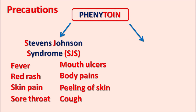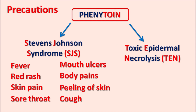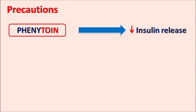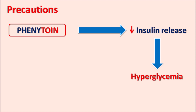Phenytoin can also produce Toxic Epidermal Necrolysis (TEN), a severe form of Stevens-Johnson syndrome including skin rashes, peeling of the skin, and fever. These hypersensitive reactions can be observed within 28 days of treatment and are more commonly observed in patients with the HLA-B*1502 genotype. Phenytoin can also reduce insulin release, thereby increasing hyperglycemia, so in diabetic patients it may increase glucose levels.